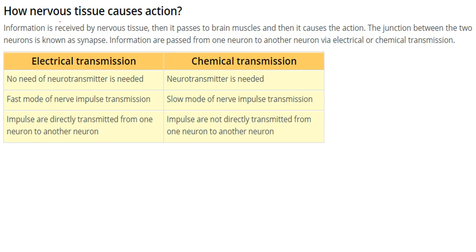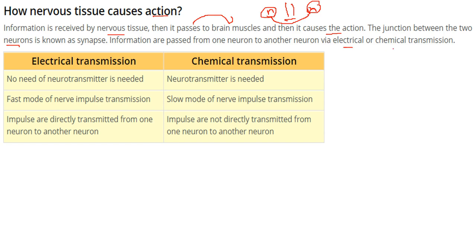How do nervous tissues cause action? First, information is received by nervous tissue, then it goes to the brain and muscles, which causes an action. The junction between two neurons is known as a synapse. Information is passed from one neuron to another via two means: electrical transmission or chemical transmission.